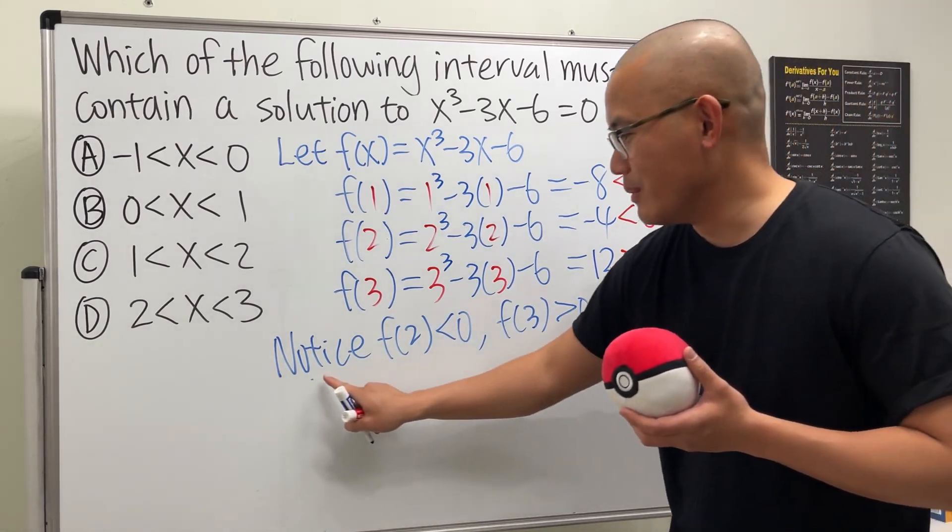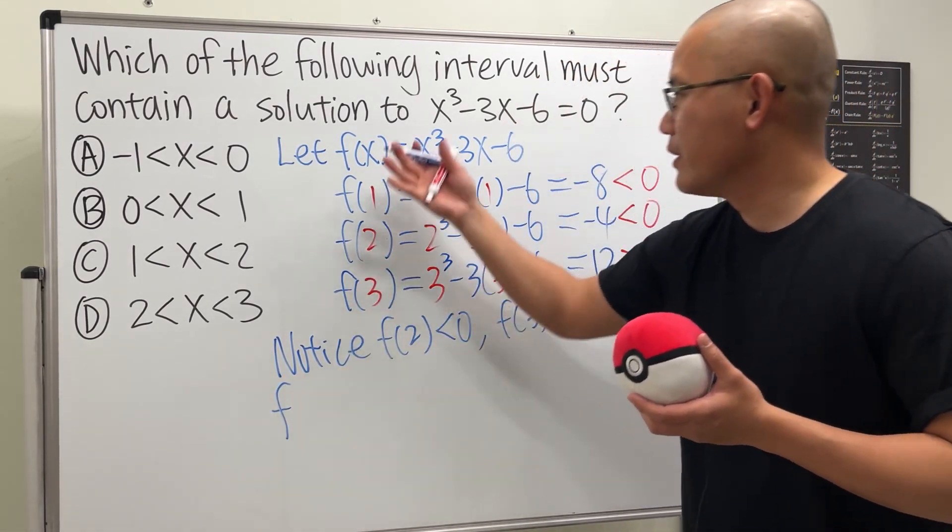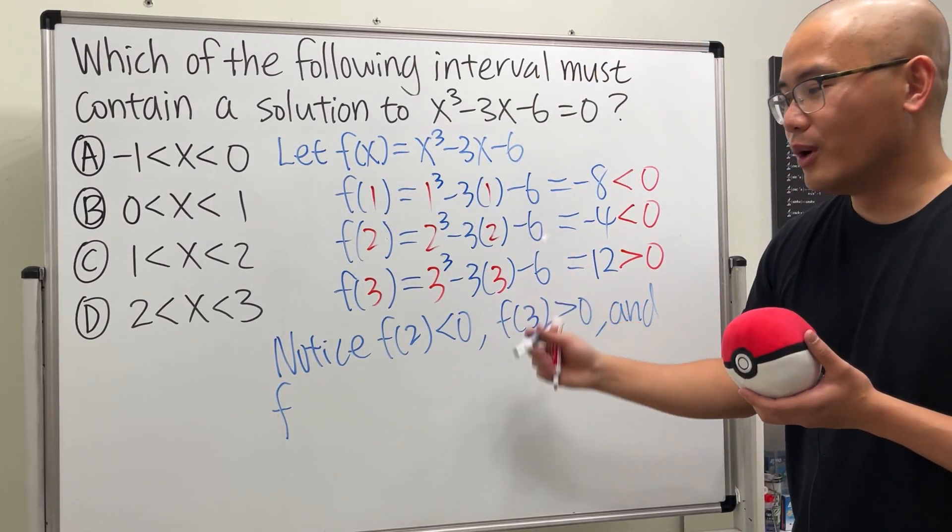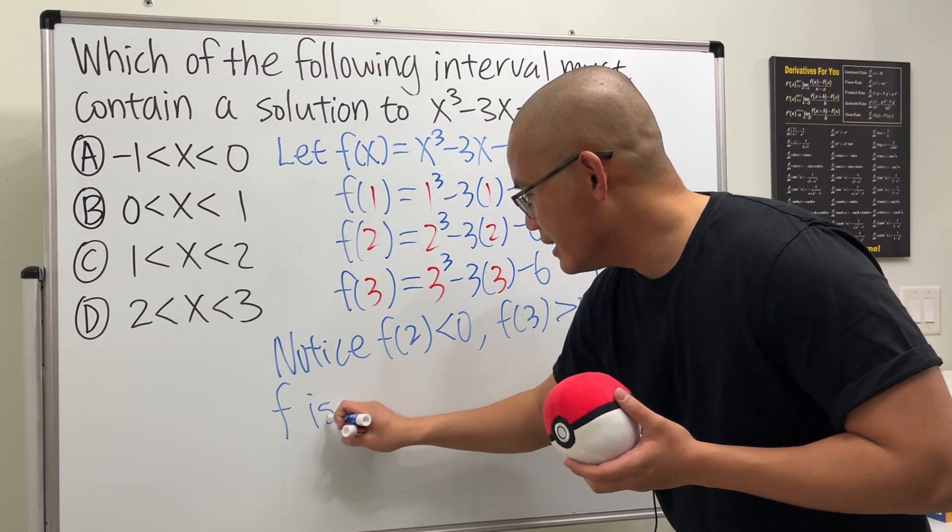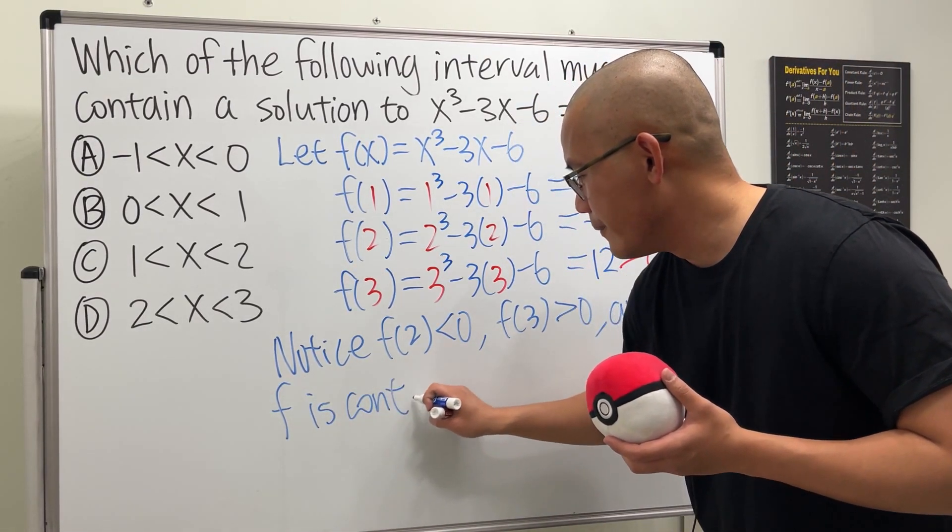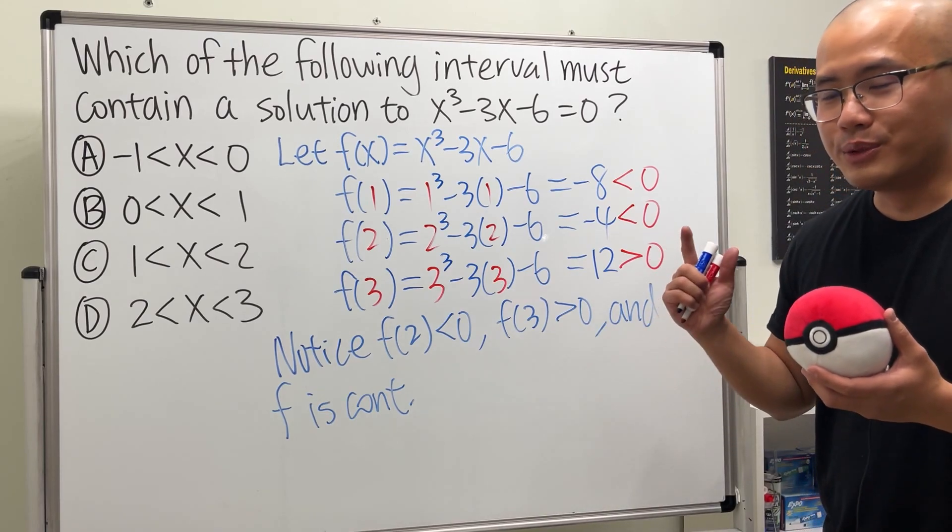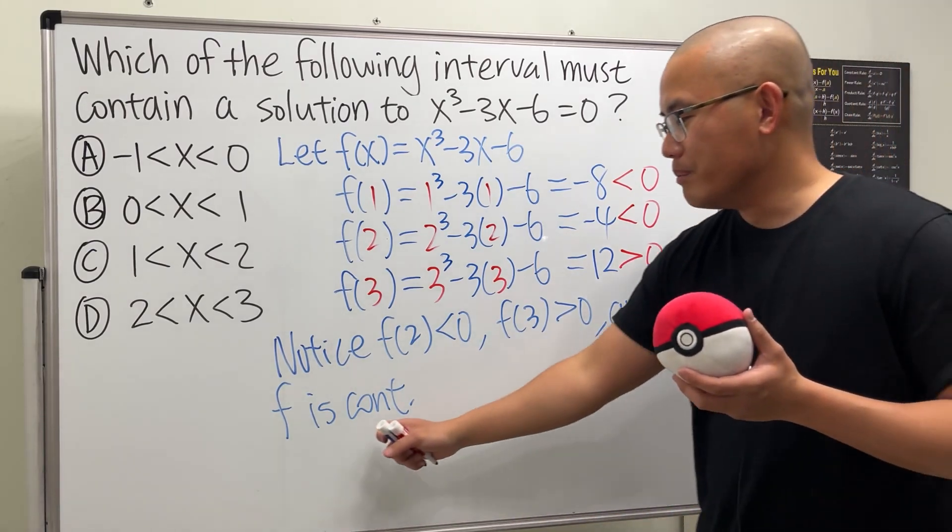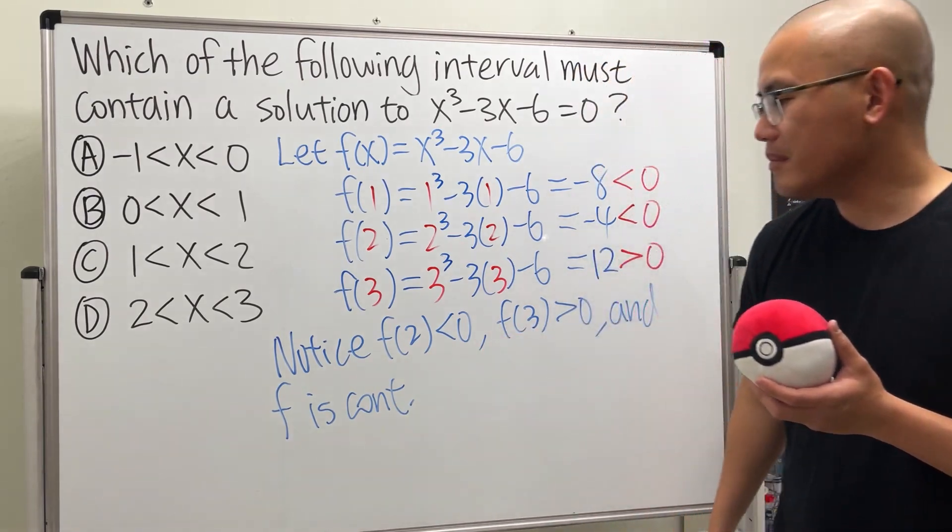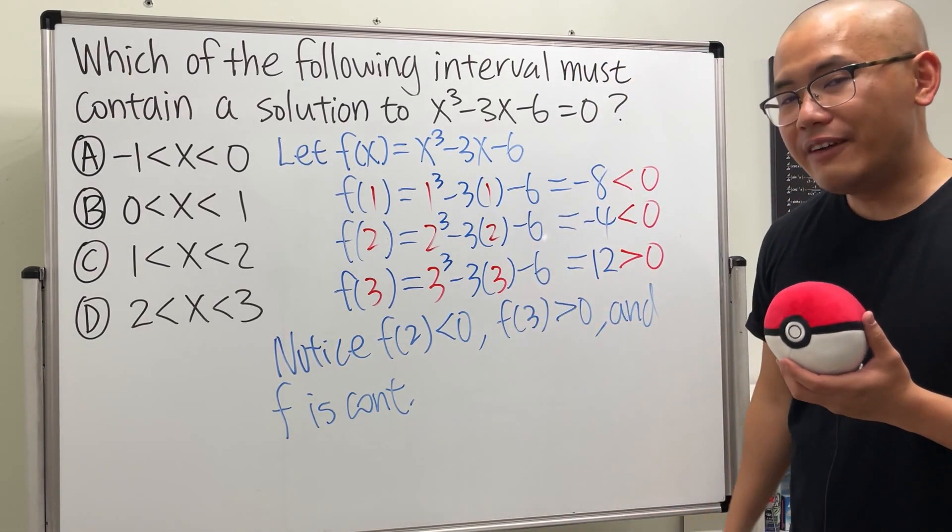And here's the one more thing I have to mention. The function f is just a cubic polynomial. f is continuous. In order for us to utilize the intermediate value theorem, we must have this part.